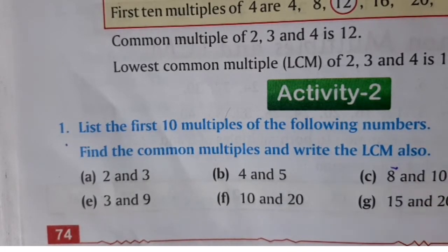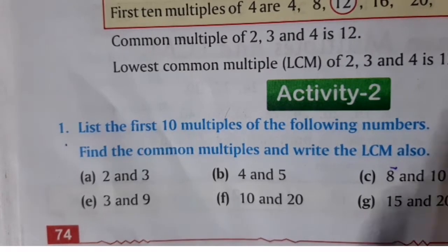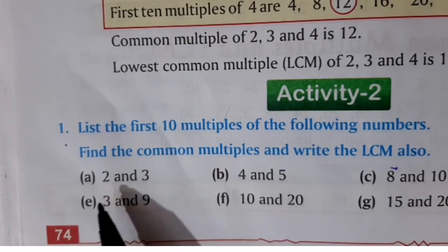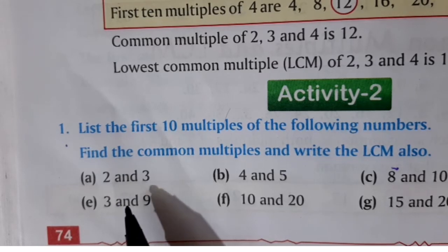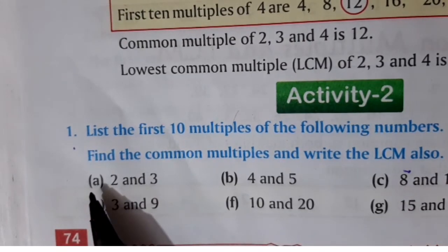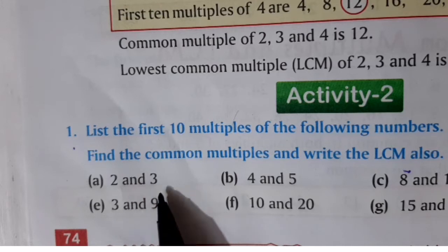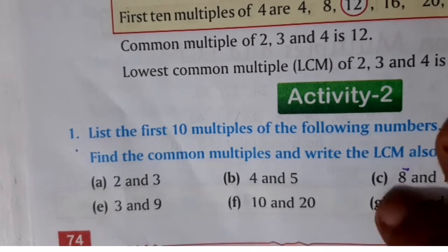Now we will start with the first part, that is A — 2 and 3. First we have to write the first ten multiples of two, and then we will write the first ten multiples of three.